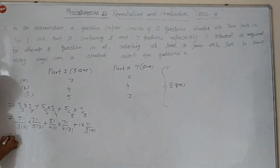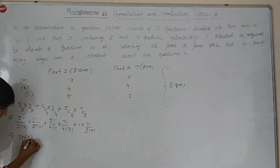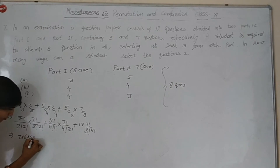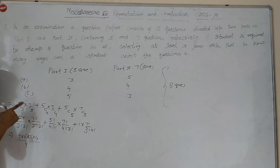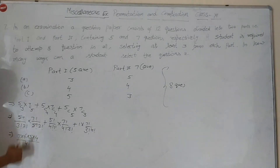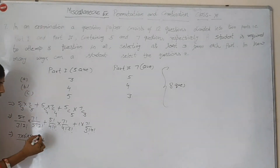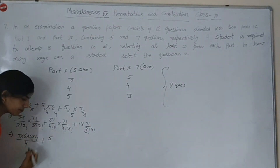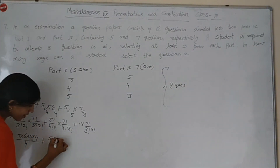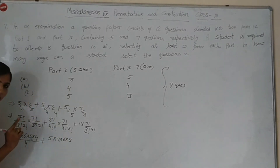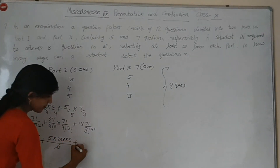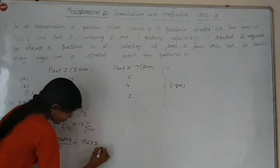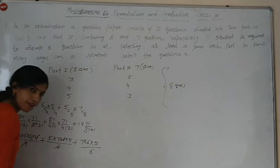Isko hum solve karenge. 5! se 5! cancel. 7! ko 3! tab liye: 7 × 6 × 5 × 4. 3! se 3 cancel ho jayega, neeche 2! solve karenge. 7 × 6 × 5 × 4, 3 se 3 cancel, neeche 2 × 2 = 4. Plus, 4! tab khatam karo — 7 × 6 × 5, 4 khatam. Neeche 3! = 6. Plus: 7 × 6 × 5, 4 se 4 gaya, aur 3 × 2 = 6. 3! = 6.